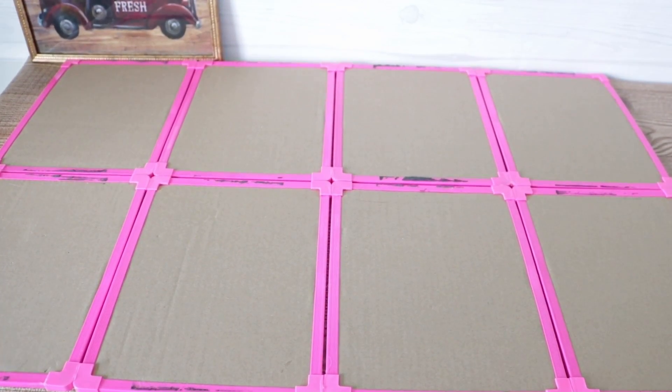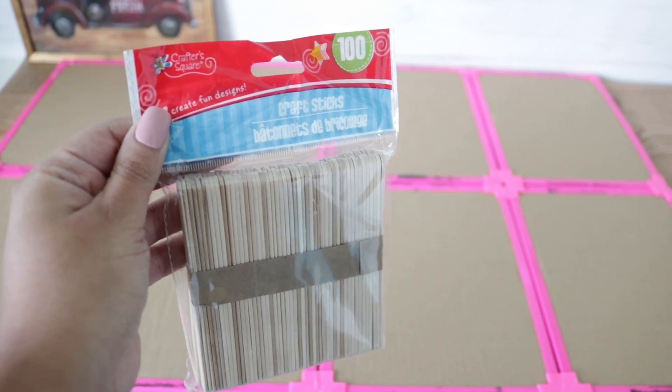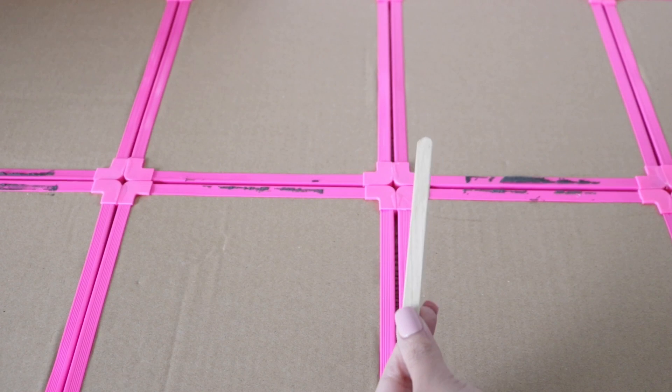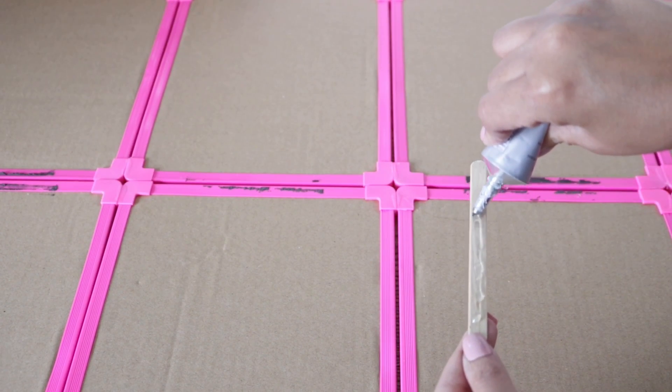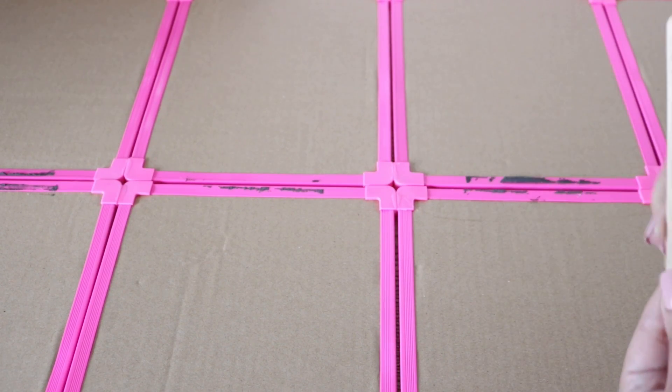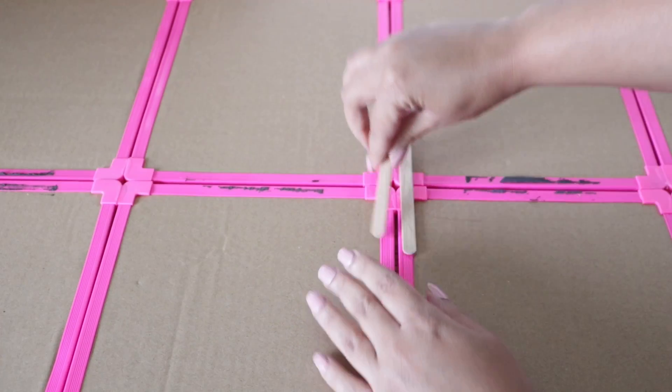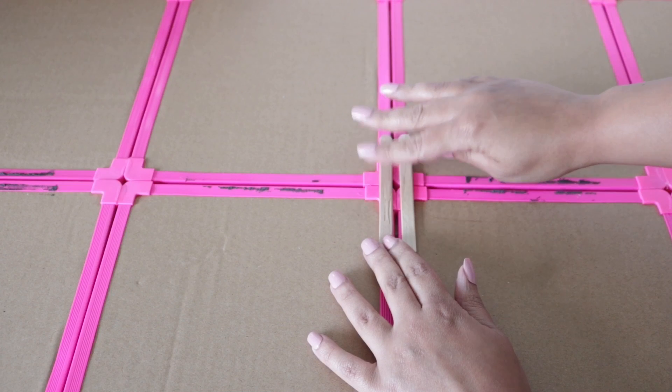Now while it's drying, I'm going to use these popsicle sticks to reinforce everything. I don't want to get them on the gaps, I'm just going to get them directly on the corners. So I'm going to add E6000 onto my popsicle sticks and start placing them right at those little corners, making sure that the gap is still visible.